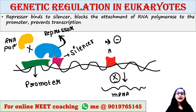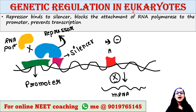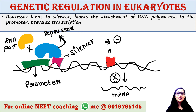The repressor binds to the silencer region and blocks the attachment of RNA polymerase to the promoter, thus preventing gene transcription. Repressors are considered to have negative control over gene expression, whereas activators increase transcription and have positive control. The silencer is the binding site for the repressor and thus has a function equivalent to the operator region in prokaryotic DNA.